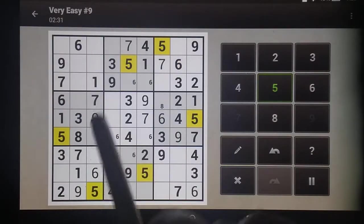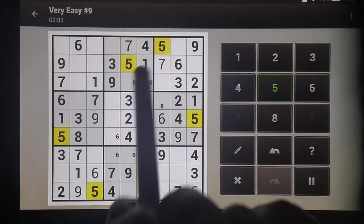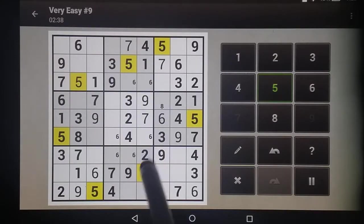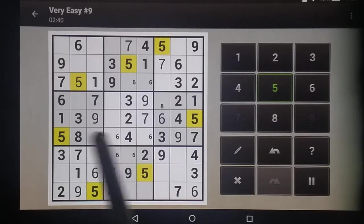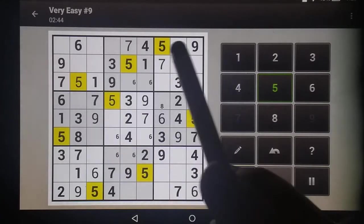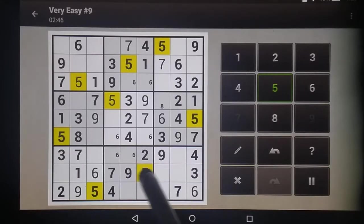So these 2 columns are taken up. This row is taken, so there's the 5 there. This column is here. This row, this row, so there's our 5. This column is done. This row is done, so there's our 5 on that one.